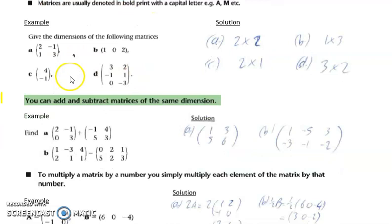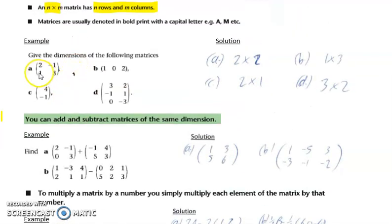The first example: give the dimensions of these matrices. The first one is a 2 by 2, it has 2 rows, 2 columns. The second one is a 1 by 3, it has 1 row, 3 columns. A 2 by 1 has 2 rows, 1 column. And a 3 by 2 has 3 rows, 2 columns.